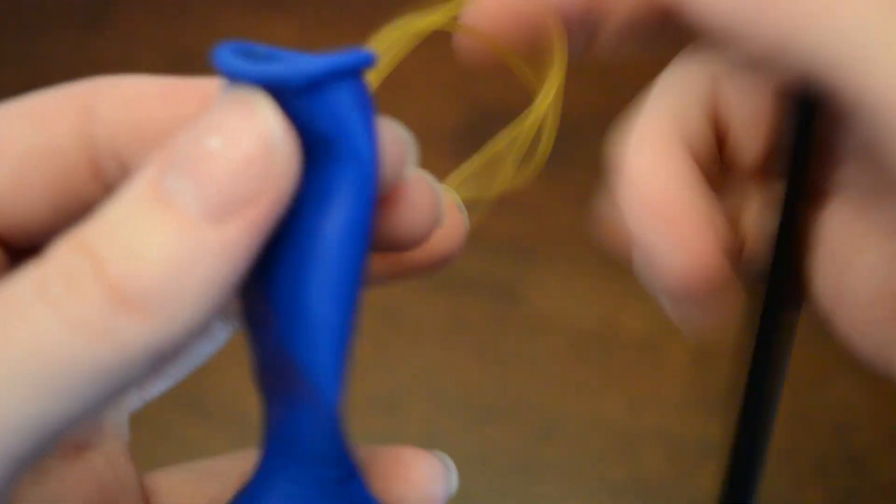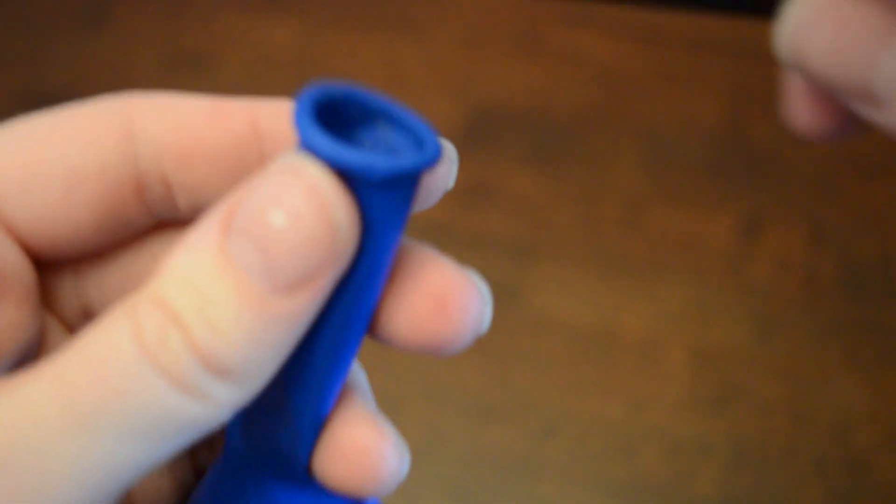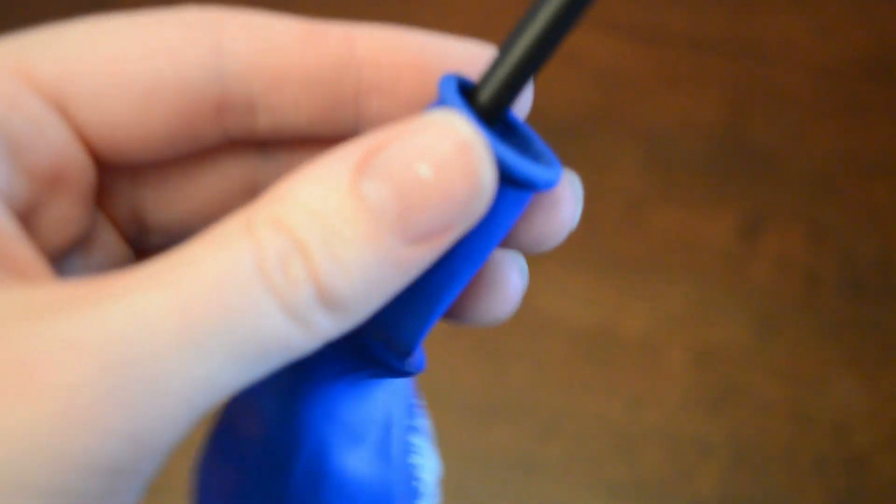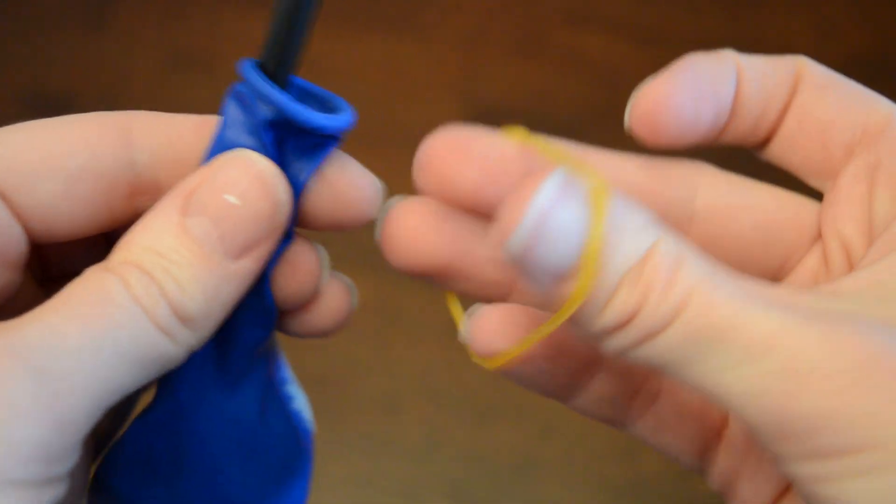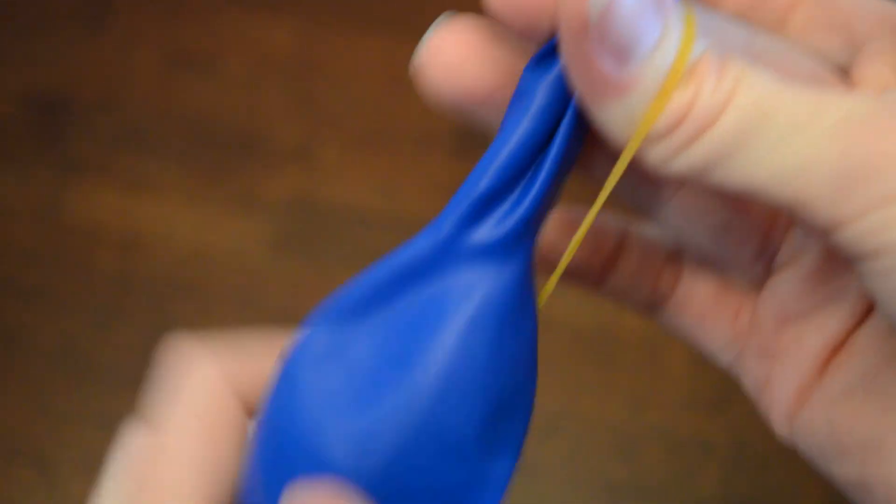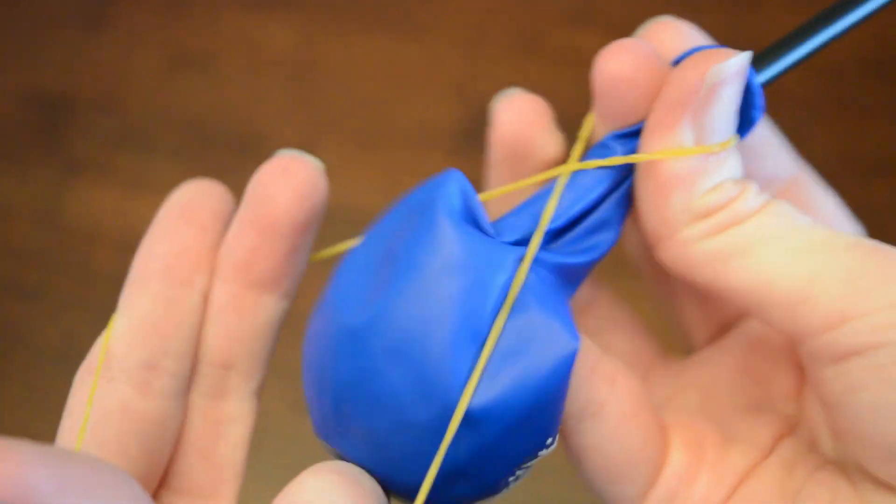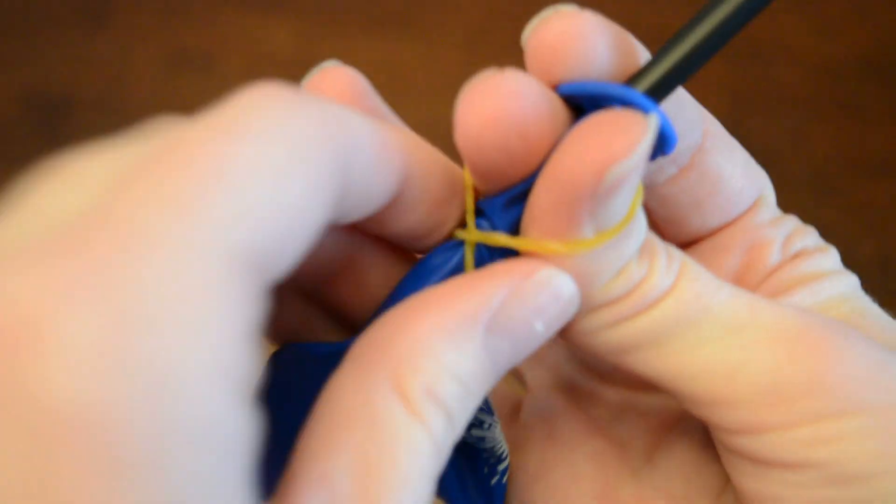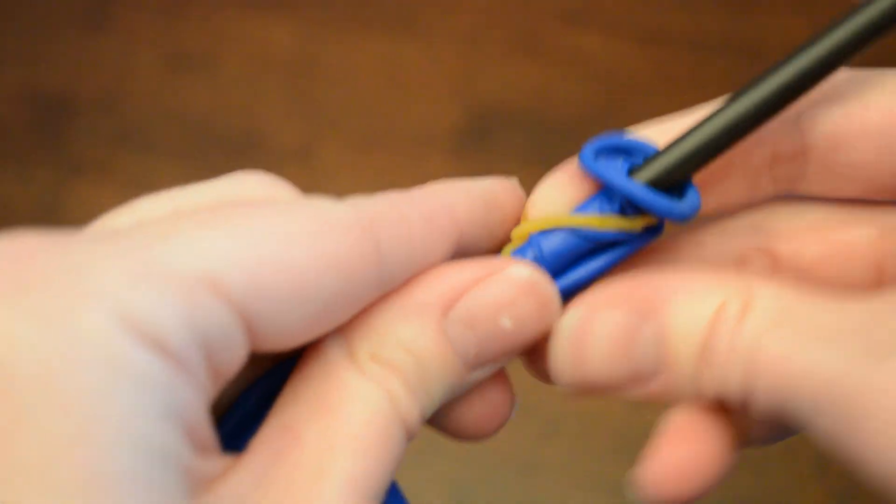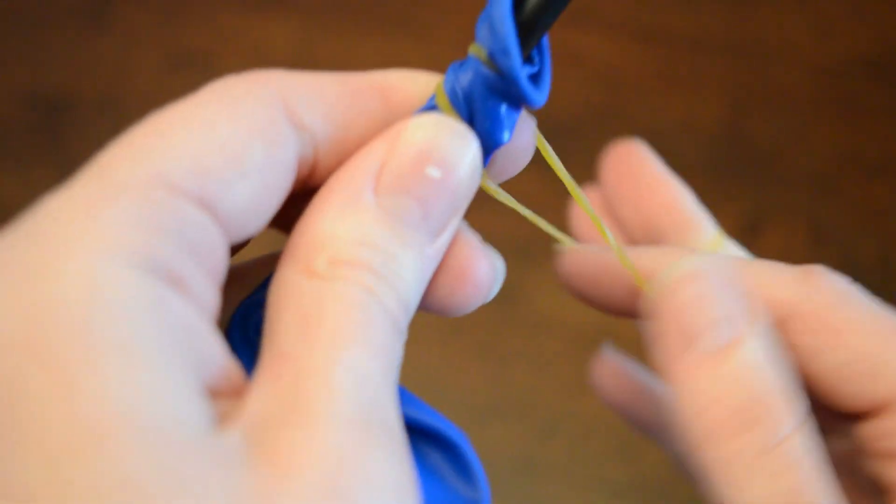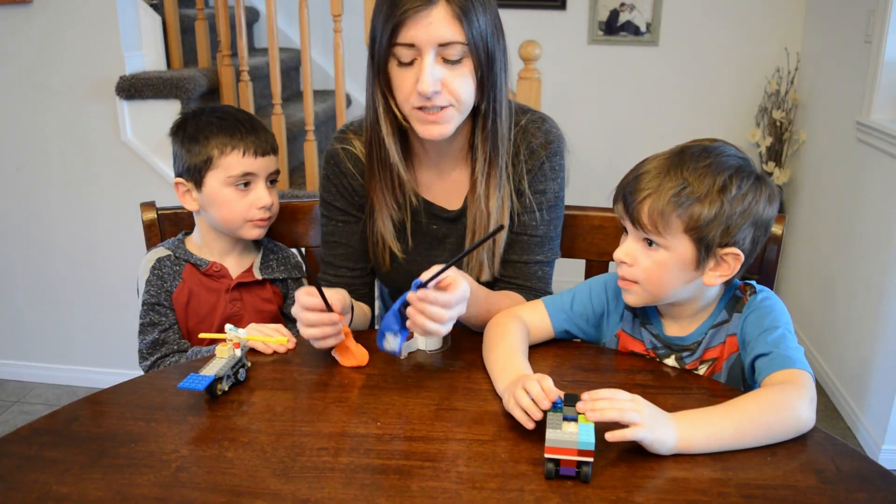You're gonna take your straw and insert it into your balloon. Then take your rubber band and wrap it around the balloon, attaching the straw on tight. Make sure it's tight enough so you're not gonna lose any air out of that balloon.